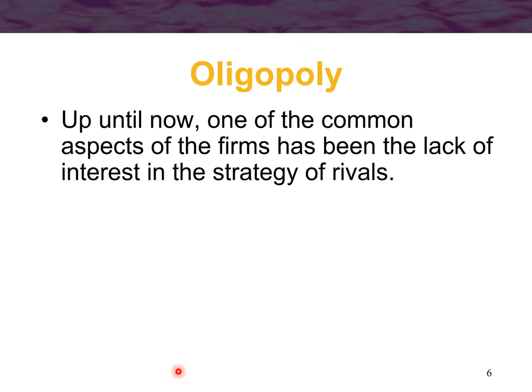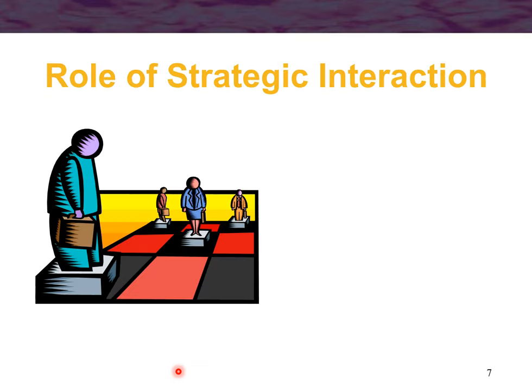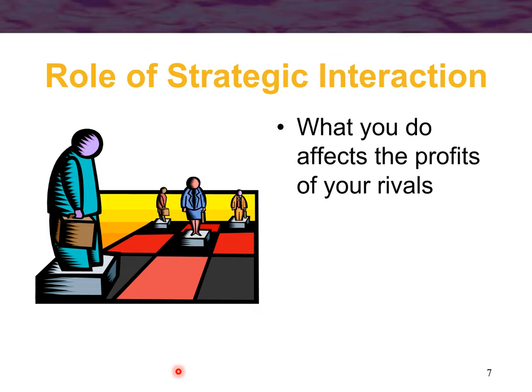Up until now, one common aspect of firms has been the lack of interest in rivals' strategy. In oligopoly, that is no longer the case — you have to take into account what your rivals will do when you act. This is one of the reasons we introduce game theory when talking about oligopoly, because since strategy is so important in oligopolistic market structures, game theory provides a mathematical way to analyze strategy and deal with the strategic issues associated with oligopoly.